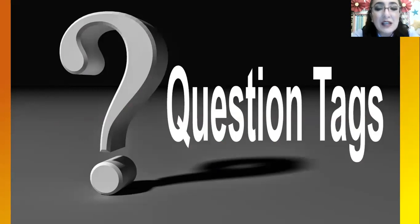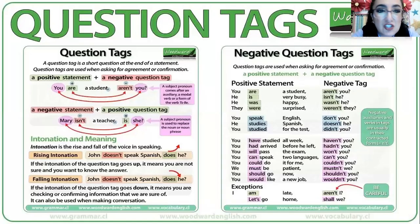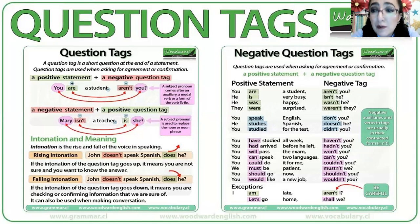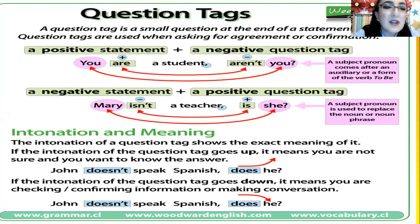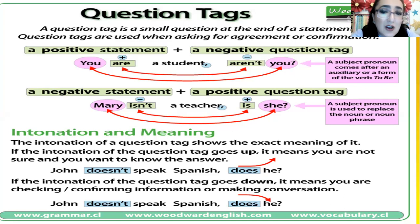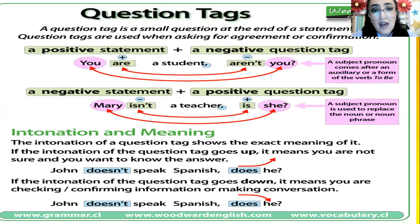During the last class, we were talking about question tags. Do you remember? Yes, we were talking about this topic. We were saying that a question tag is a short question at the end of a statement, and question tags are used when asking for agreement or confirmation. Let's continue — we were saying that if you are going to be saying something affirmative, you need to ask with something negative. And if you are going to be mentioning something in a negative statement, your question tag had to be affirmative.